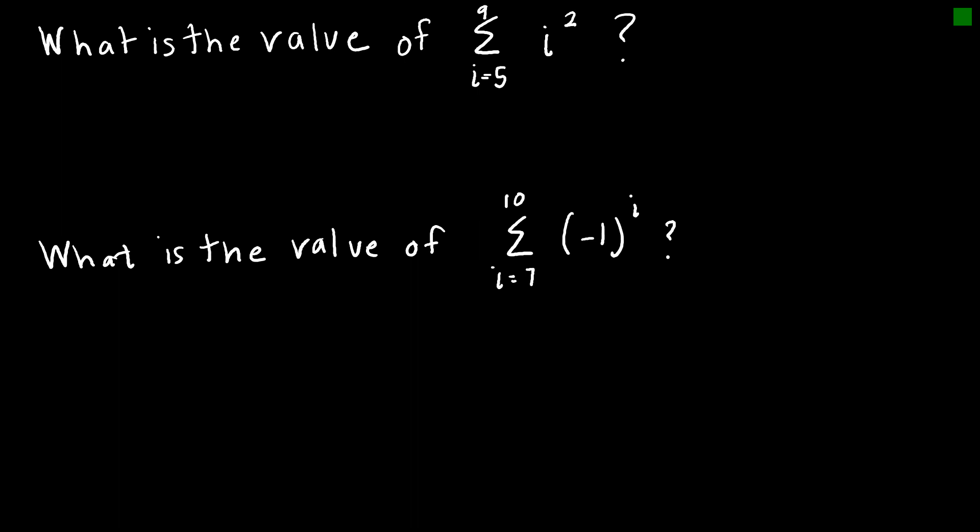So let's look at a few more examples where we're actually asked to find the value. So in this case, we are actually looking for finding the summation rather than being able to write a series in a summation. We're going backwards. We're saying here's the series, find the summation. So this one starts from, this goes from I equals 5 through 9 of I squared.